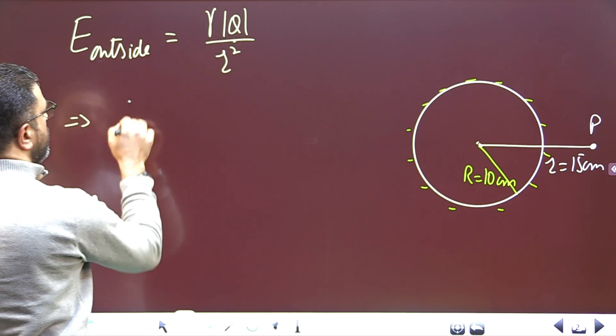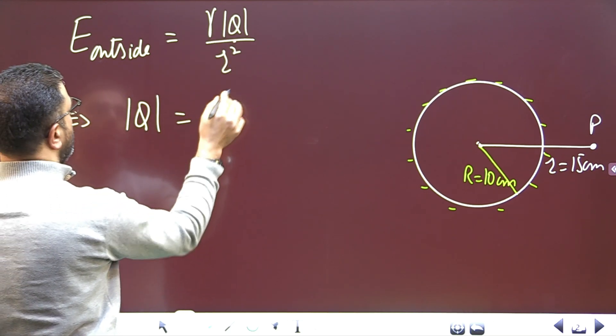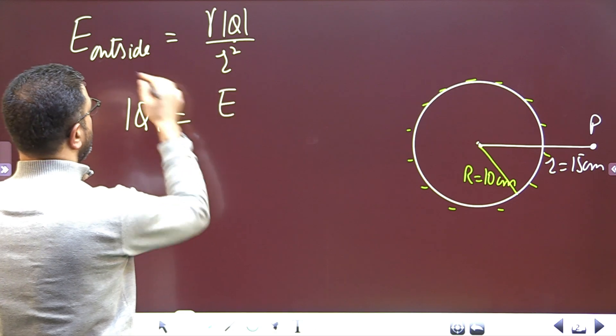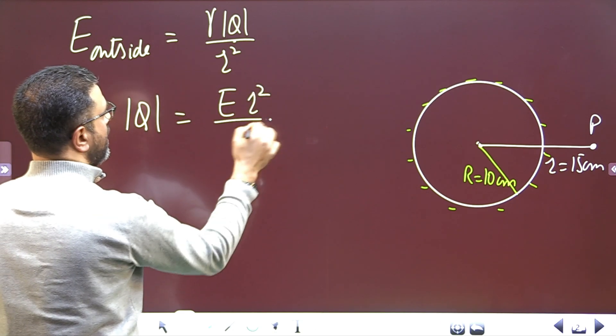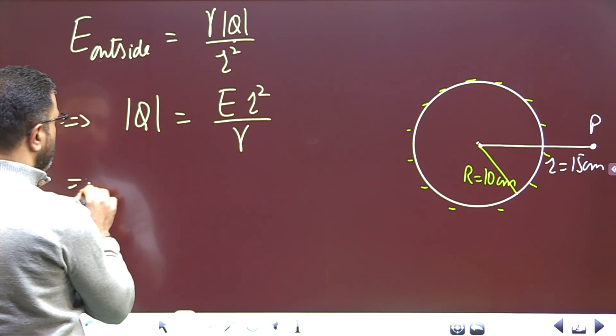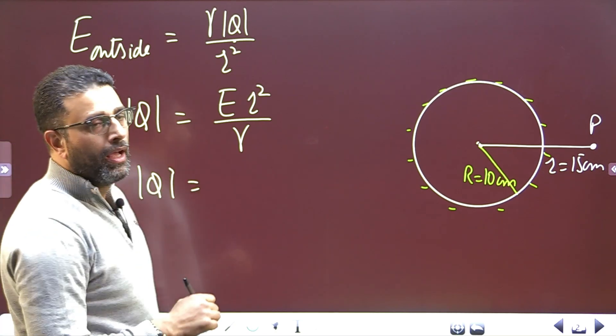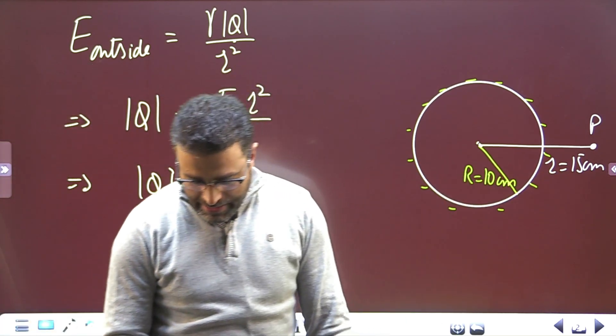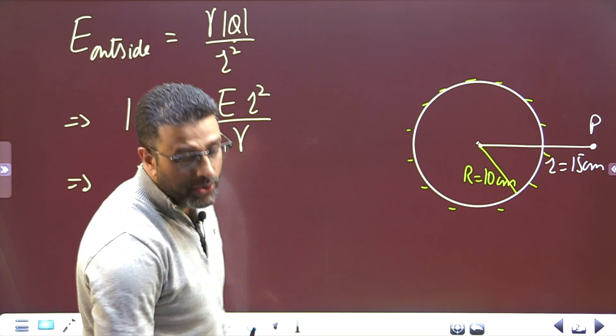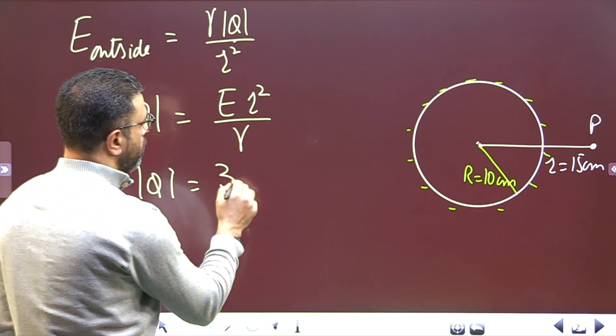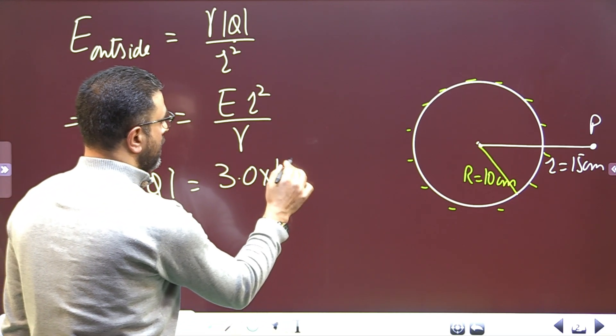That minus sign will be included at the end. For now, we'll just deal with the magnitude. From here we can find Q: Q = ER²/k. So |Q| = E... Now E at a distance of 15 centimeters is given to us as 3.0×10³ Newton per Coulomb.